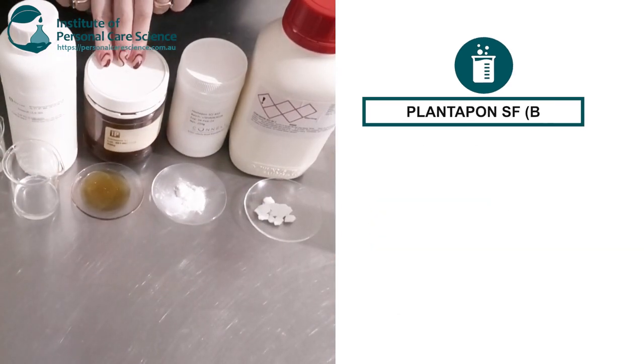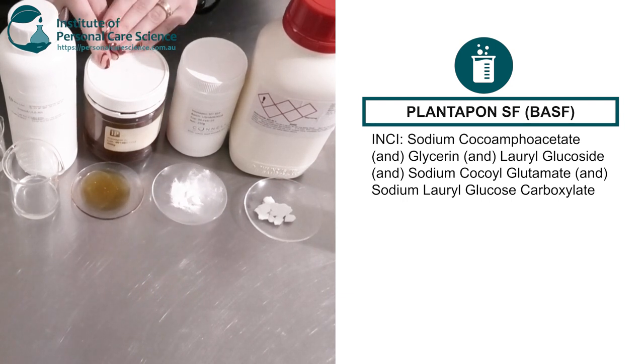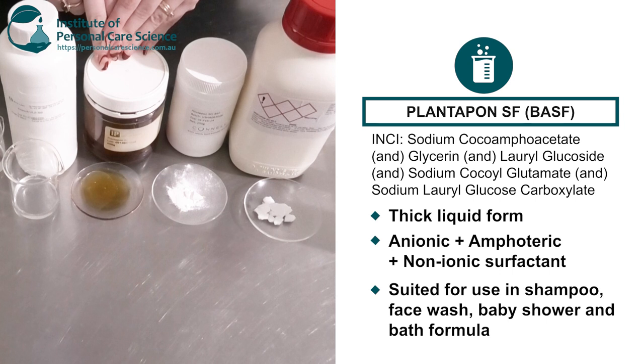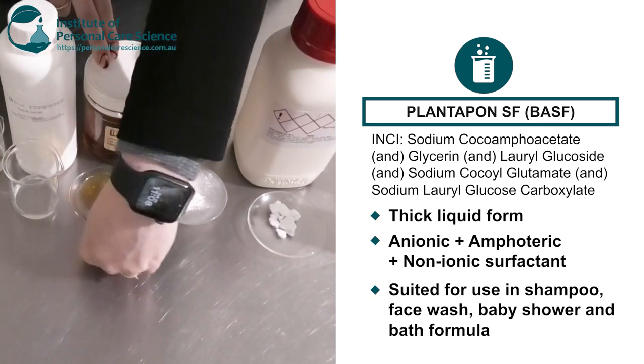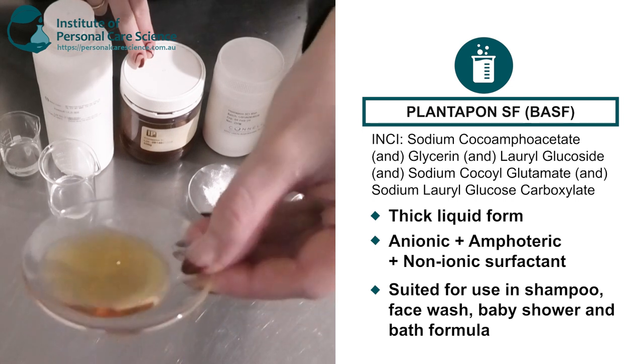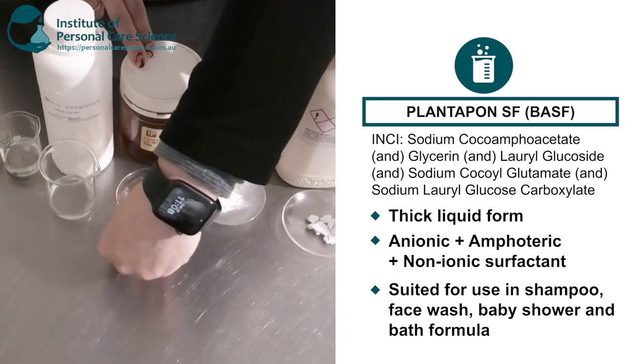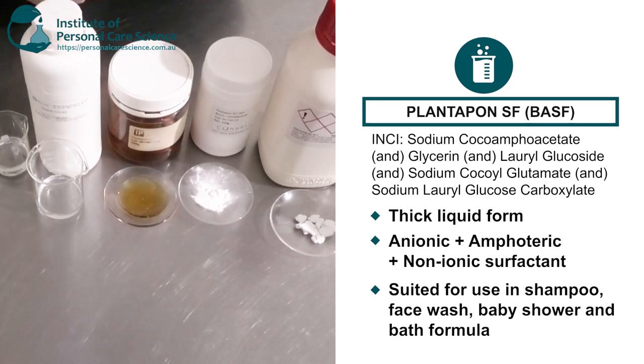Next I have the PlantUpon SF. This is actually a blend of surfactants. So this has anionic, amphoteric and non-ionic in it. And as you can see here this is quite a bit of a thick liquid and this is a very mild blend of surfactants. So perfect for shampoos, facial products, cleansing products for children or anyone's sensitive skin.